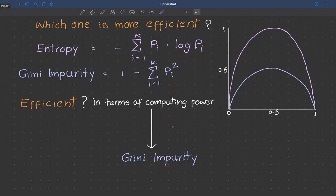In terms of computing power, Gini impurity is more efficient than entropy. Now, if we think about the efficiency in terms of performance, then we usually don't see much difference in the performances.